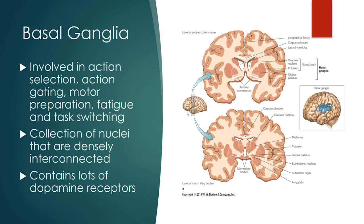The basal ganglia is heavily involved in motor preparation and task switching. It's a heavy target of Parkinson's treatment — deep brain stimulation involves sending a wire deep into the brain to stimulate basal ganglia neurons. One unfortunate thing with Parkinson's disease is that it's neurodegenerative — those neurons are actually dying — so there's a point where giving L-DOPA or doing deep brain stimulation won't work because there are no more neurons to stimulate. These structures are still organized in nuclei and contain a lot of dopamine, which is why Parkinson's is relevant here.